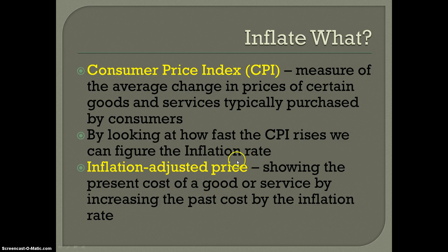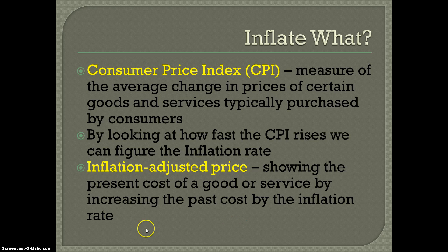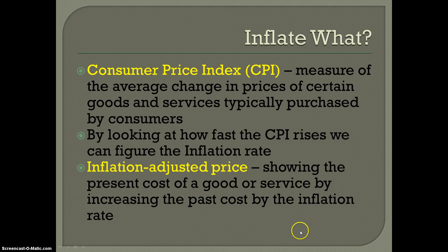You can take that and figure out the inflation rate. An inflation-adjusted price shows the present cost of a good — you take the inflation rate and apply it to the good to bring it to this year. Let's say inflation was a certain percentage — it might show that you should be buying that Coke for a dollar fifty, not two dollars, meaning Coke has raised its price a bit more than inflation, increasing their profit. Or it might tell you you should be paying two dollars and a quarter, meaning Coke is actually losing a little bit of their profits, depending on the inflation rate.